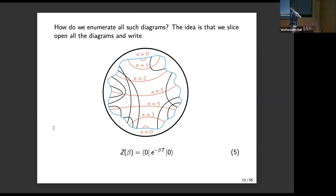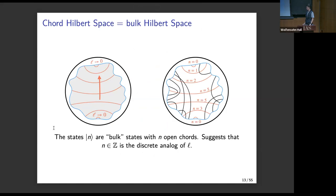The idea to make contact with JT gravity is to slice open the chord diagrams in a particular way. Given any chord diagram, you can find a location where no chords pass through the red slice. As we advance in the left or right direction and insert H, the Hamiltonian, that defines a transfer matrix — and you can see it's very suggestive that this equation is related to the JT gravity equation I wrote before. This immediately suggests that the chord number plays the role of length in the double-scaled theory — the chord number is a discrete integer while length is continuous, but in particular limits they agree.